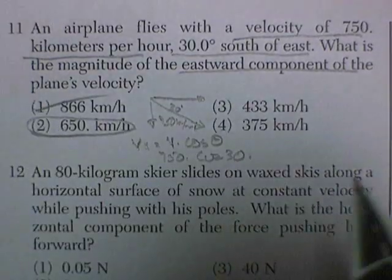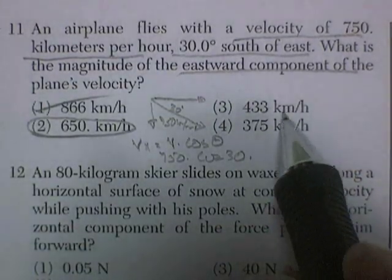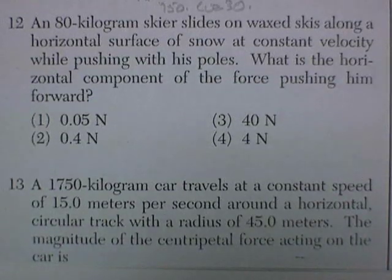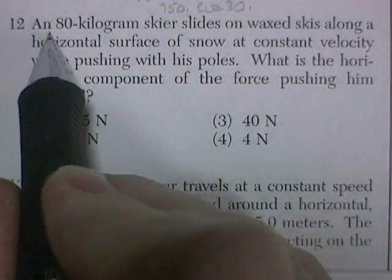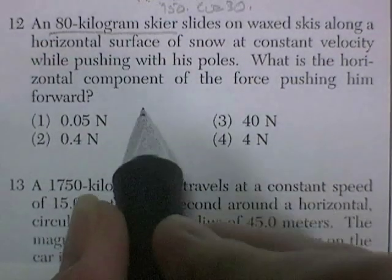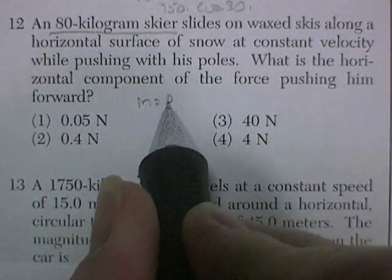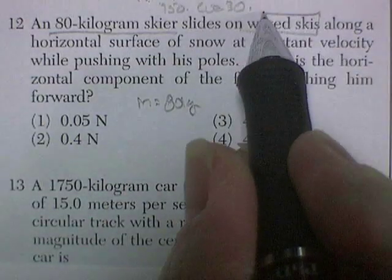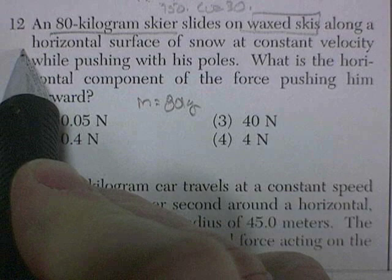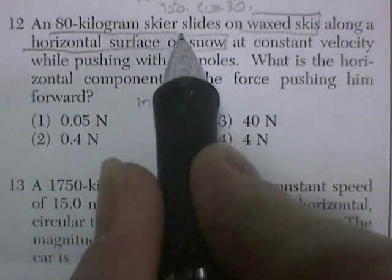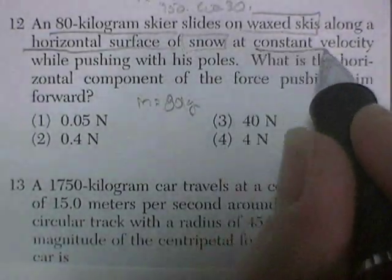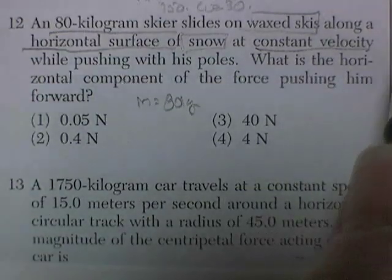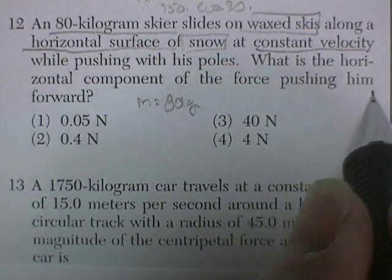This is greater than 750, so it won't be that — those are wrong answers. Question 12. An 80 kg skier, mass is 80 kg, slides on waxed skis along a horizontal surface of snow at a constant velocity while pushing on his poles. What is the horizontal component of the force pushing him forward?